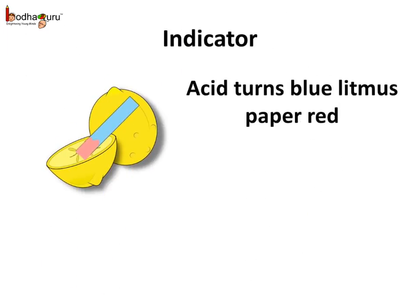When blue litmus comes in contact with acidic substances like lemon, it turns red. Amazing isn't it? Just a simple litmus paper strip can help us identify the nature of substances.